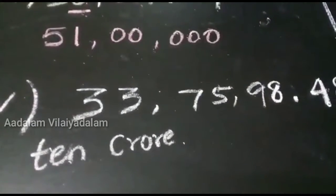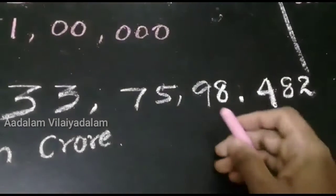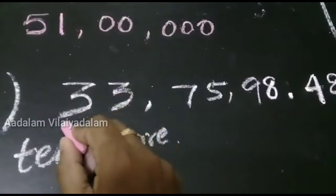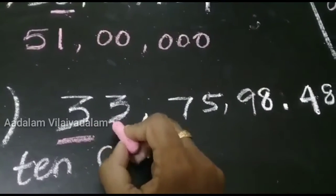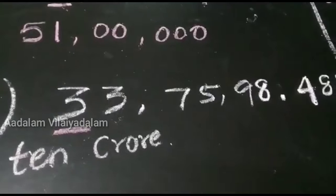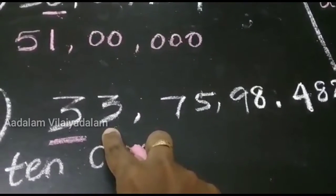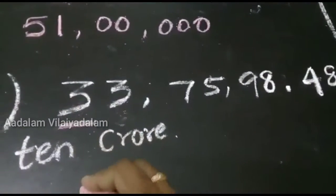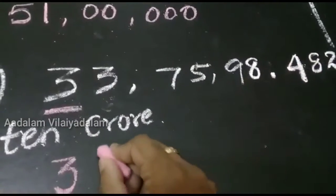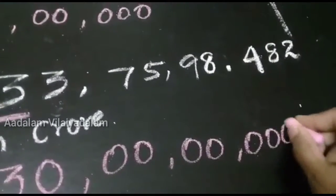Fifth one: round off to the 10 crore place. First, you identify the 10 crore digit: 1, 10, 100, 1000, 10,000, lakh, 10 lakhs, crore, 10 crore. This is the 10 crore digit. Next, you consider the second digit. If the digit is less than 5 — here the number is 3, which is less than 5 — no need to change the number. Write the number as it is. Remaining digits, we put 0.